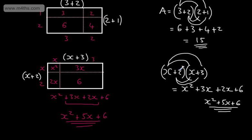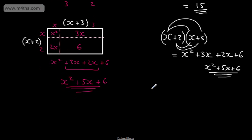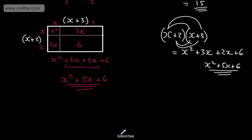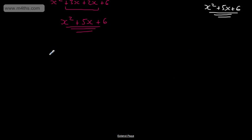Another killer mistake: people often just add 2 and 3 to get 5. You must multiply each term and then collect them. Expanding brackets is the opposite of factoring, and there are plenty of videos on the site about factoring.